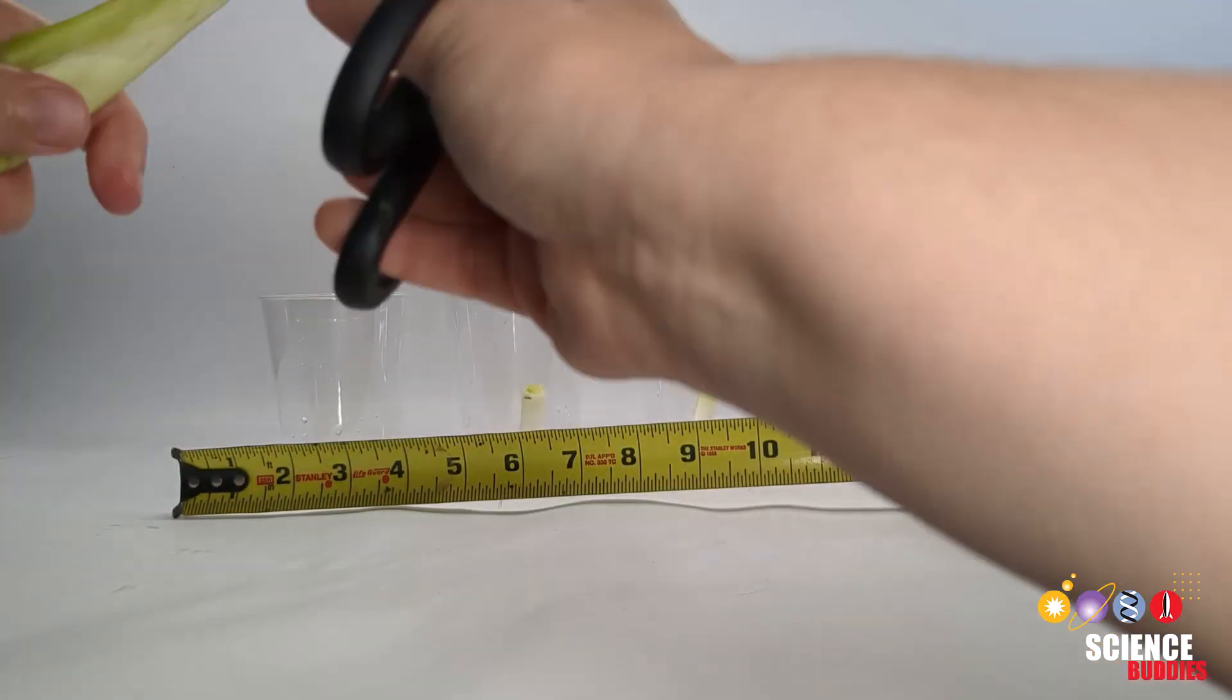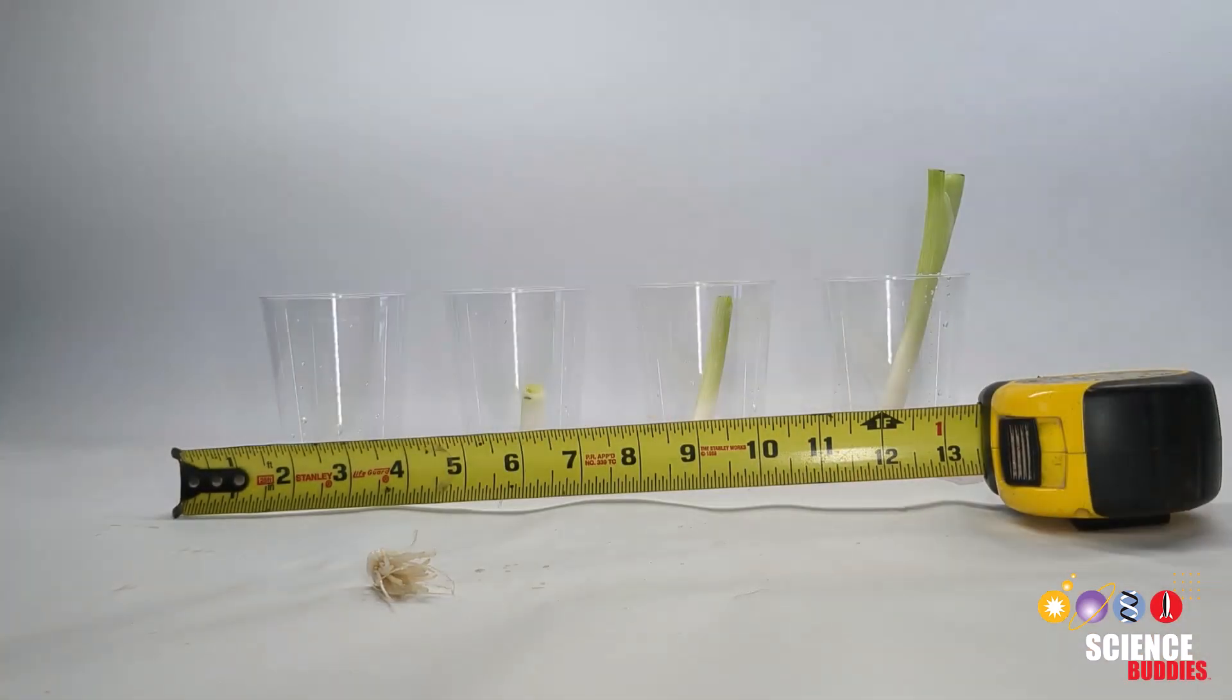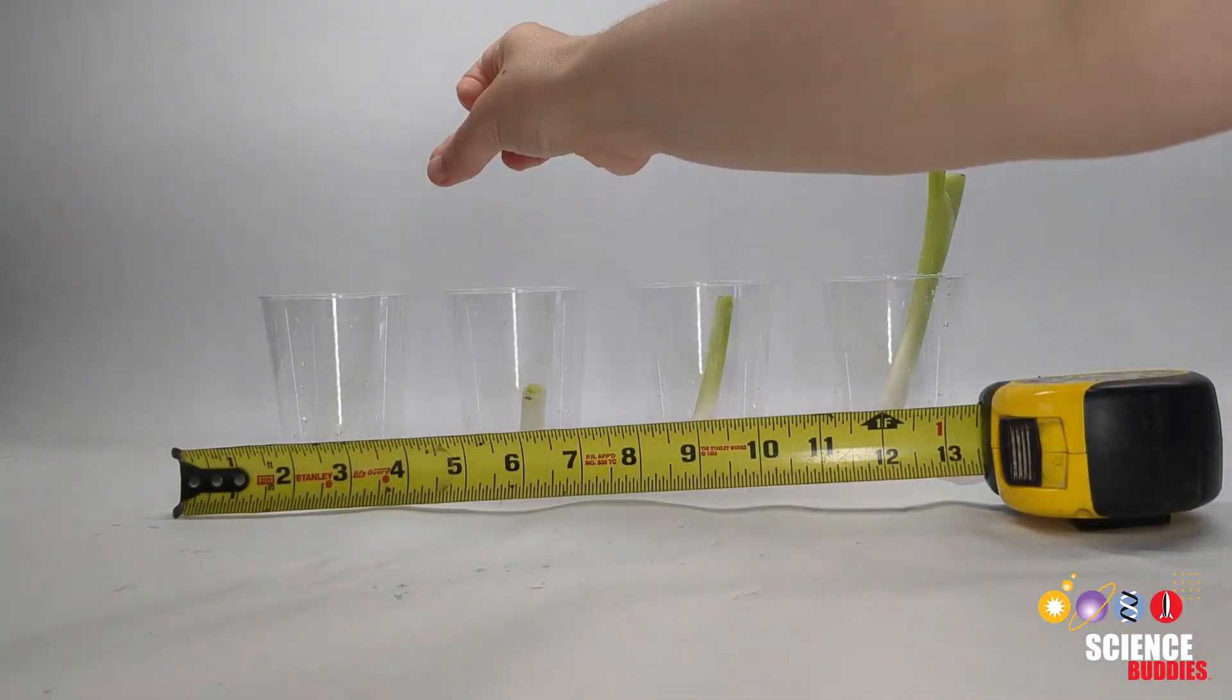To keep track of the regrowth of the plant, measure and mark the initial cut site with a permanent marker. Repeat this for each condition.